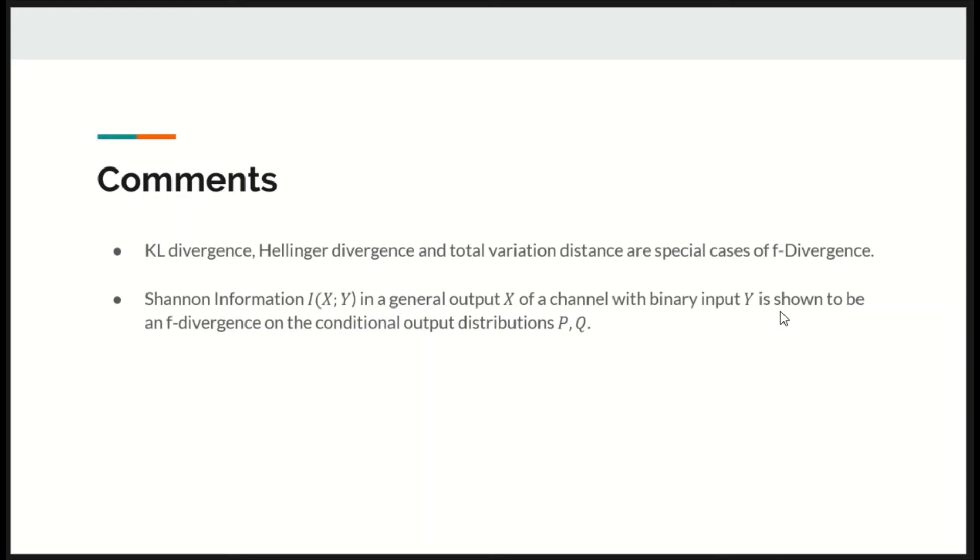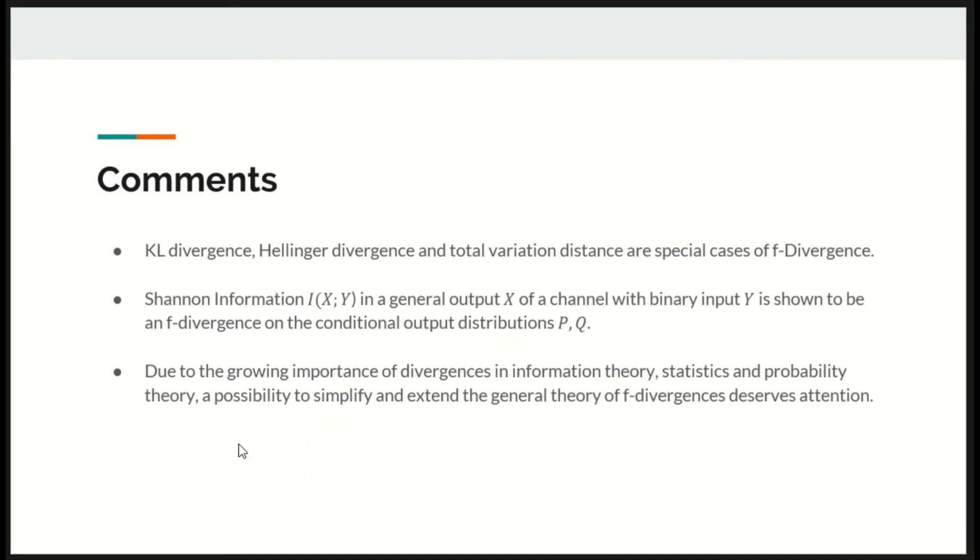Shannon information I(X,Y) in a general output X of a channel with binary input Y is shown to be an F divergence on the conditional output distributions P and Q which we just proved now.